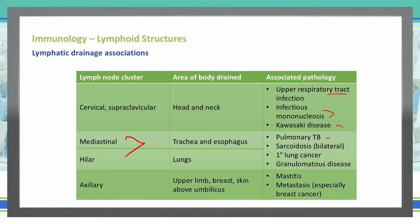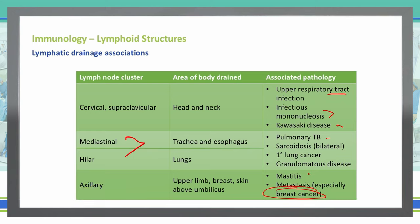The axillary lymph node system drains the upper limb, the breast, and the skin above the umbilicus. It's most commonly associated with mastitis and metastasis. Patients diagnosed with breast cancer — we always look to the axillary lymph nodes to see if there's any metastasis, if it's moved anywhere beyond that breast tissue, and to determine how much further it could have spread through the body via the lymph system.